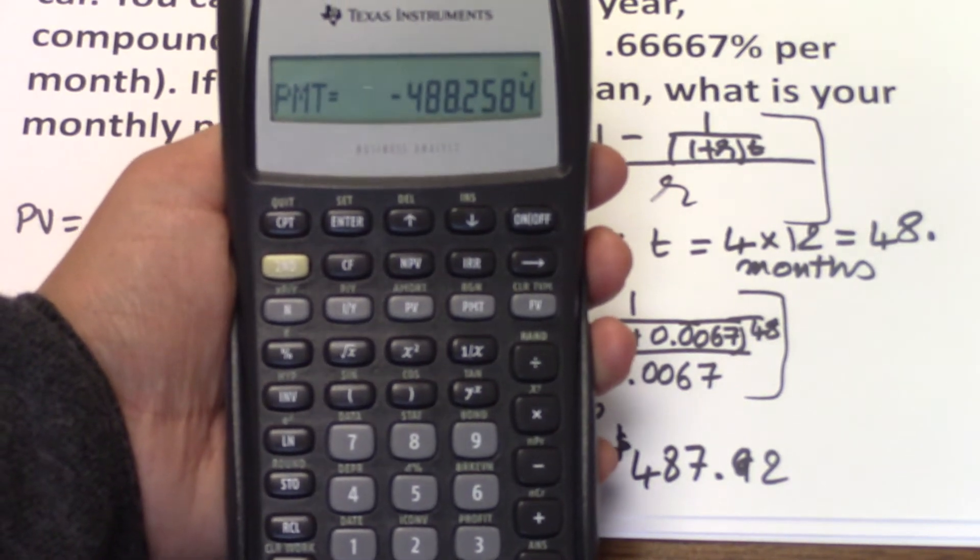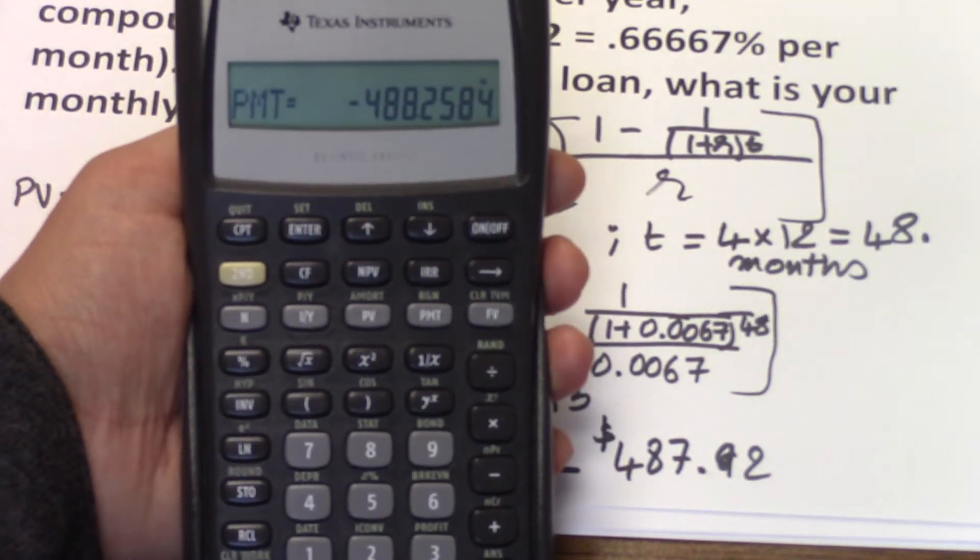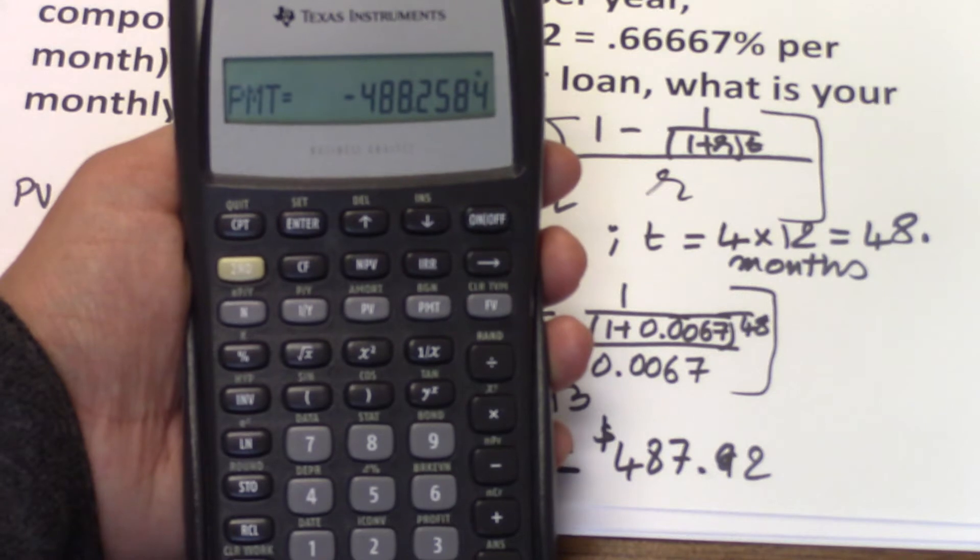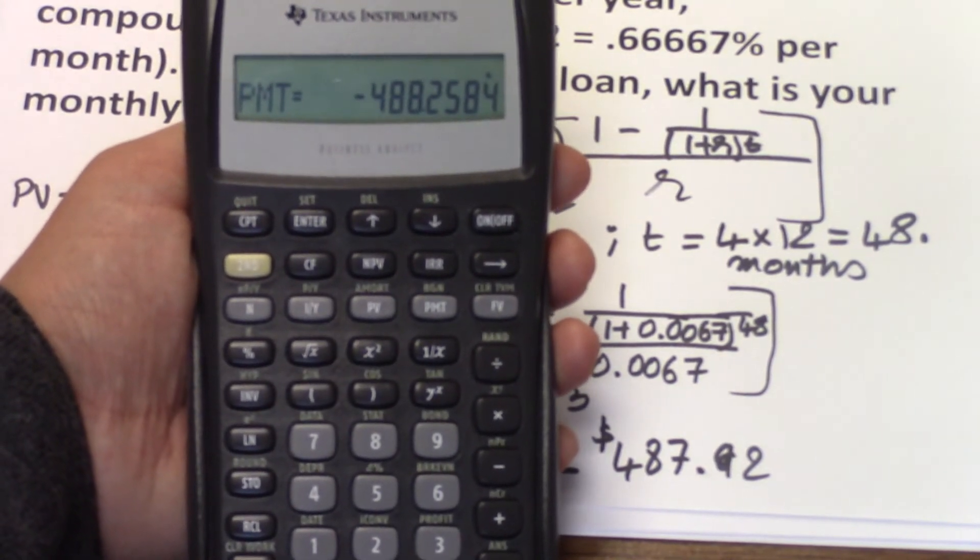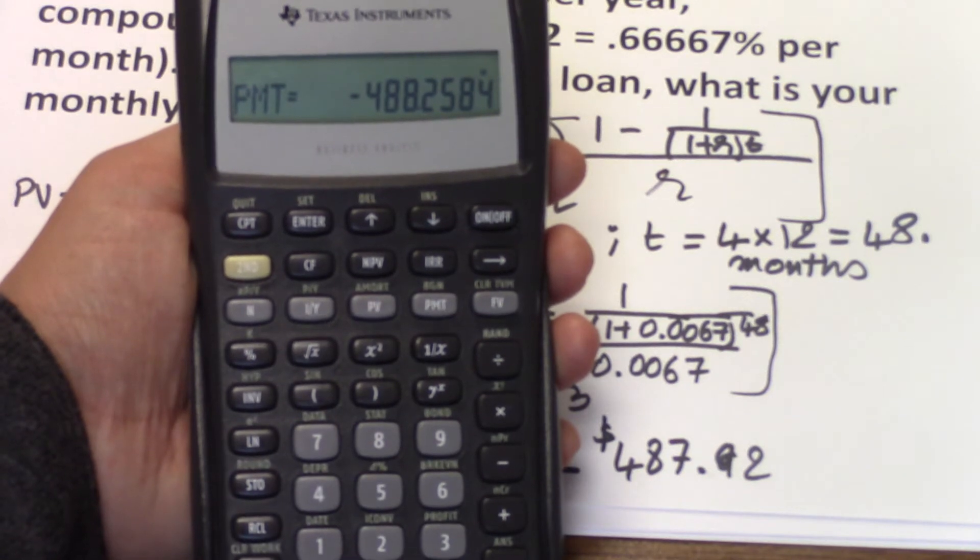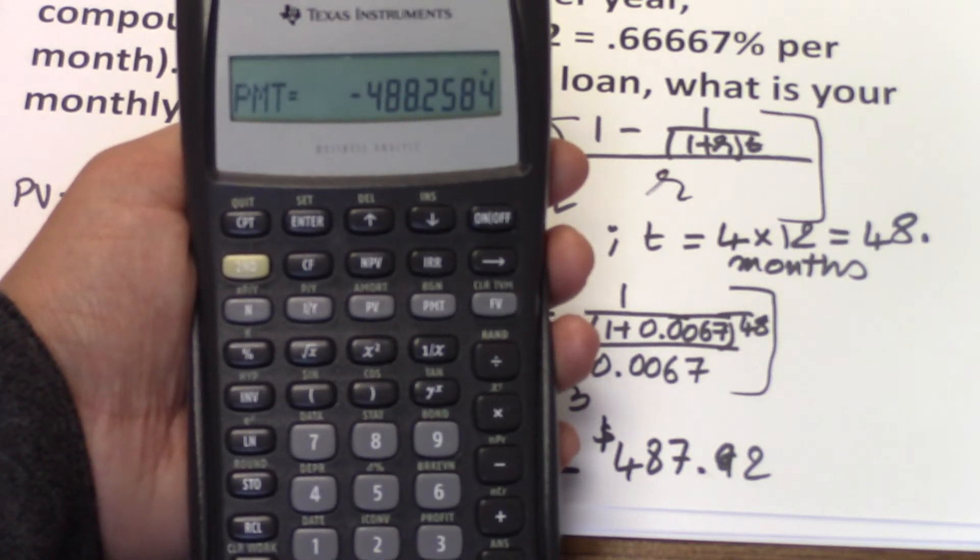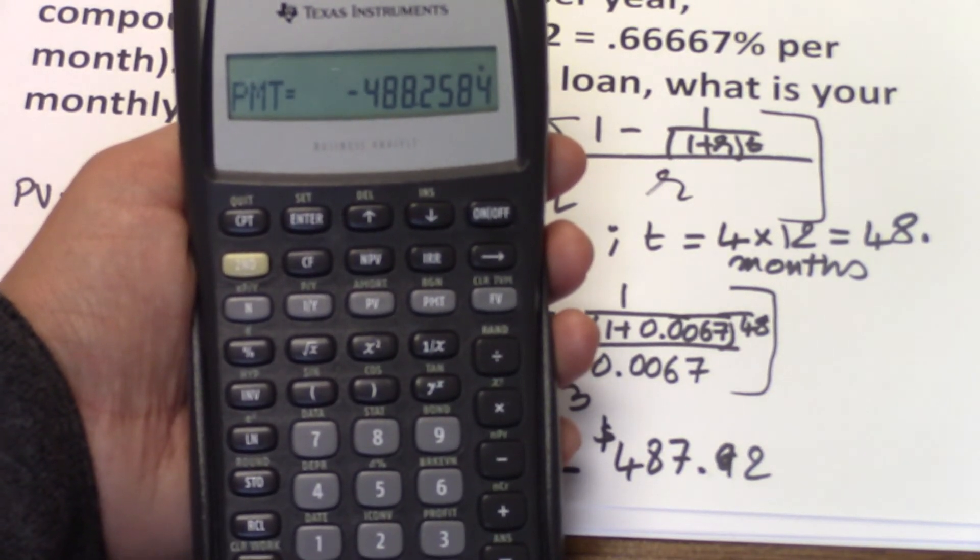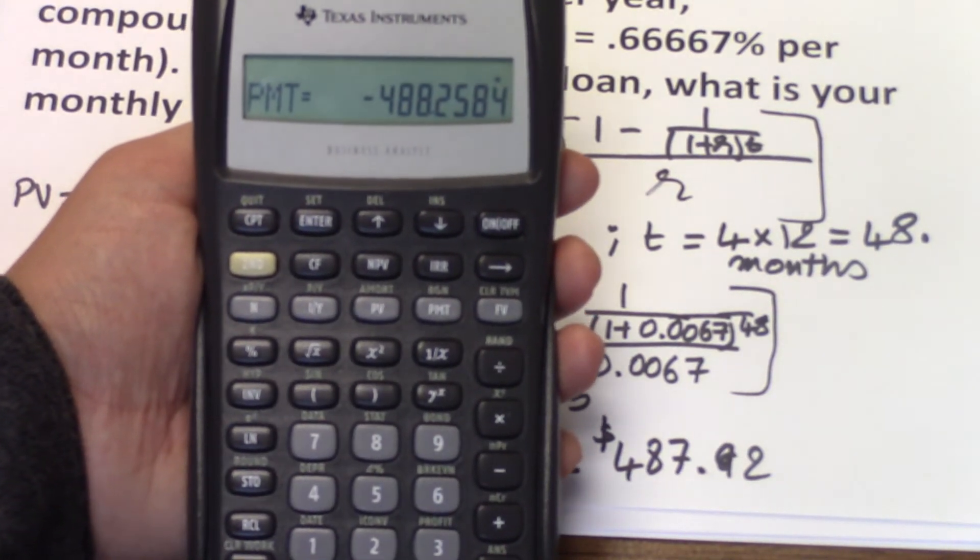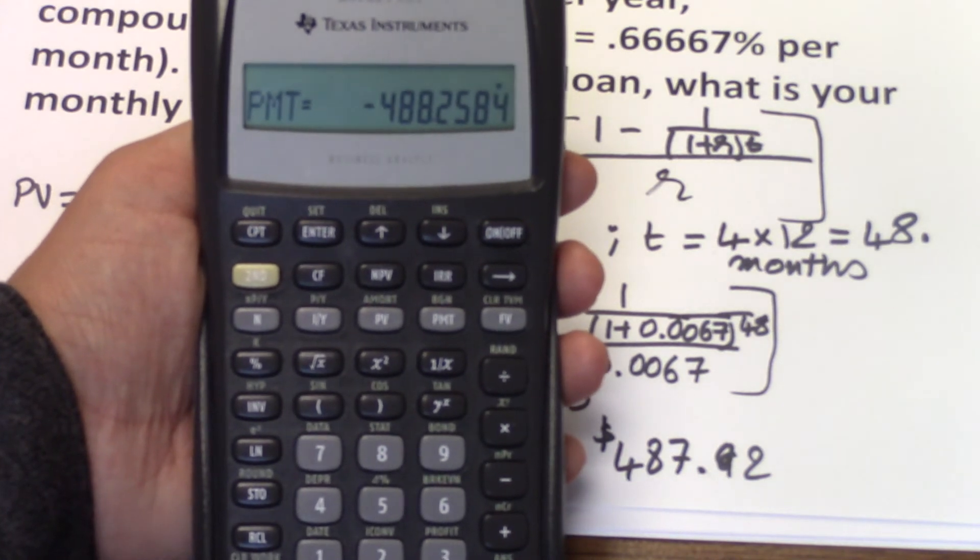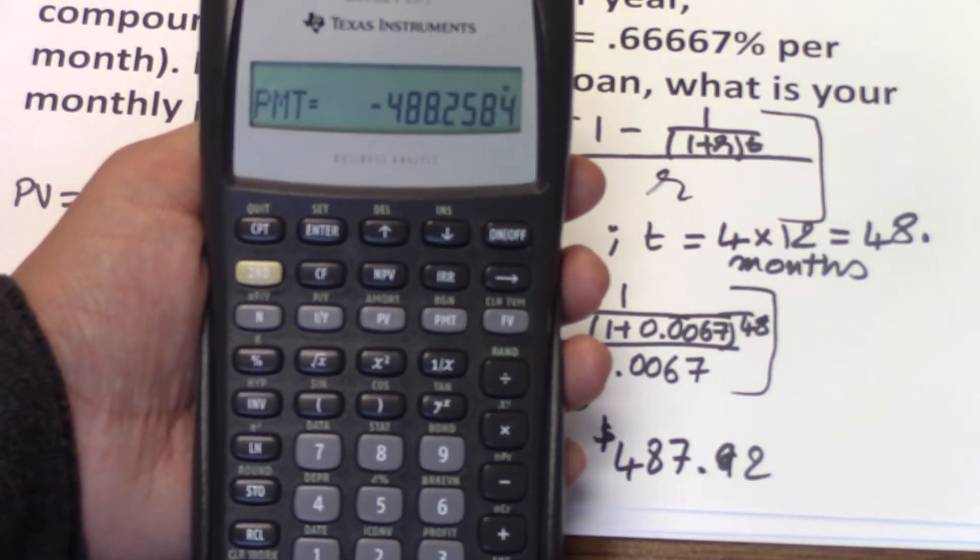Really close to what we found of 487.92. The most accurate number is the one given by the financial calculator. When calculating by hand, we tend to round numbers, so we're less likely to get very accurate numbers.